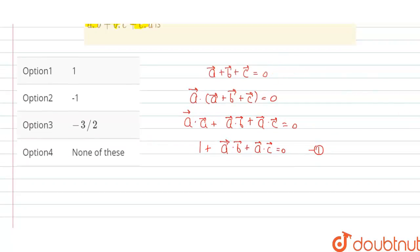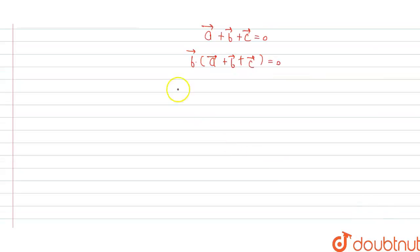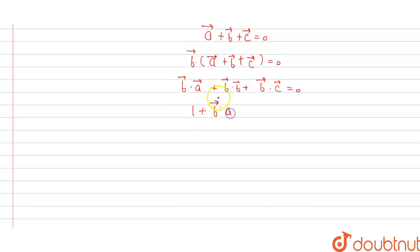Now we will again take a plus b plus c is equal to zero and take dot product with b on both sides. We get b·a plus b·b plus b·c is equal to zero. The value of b·b is one, so we get 1 plus b·a plus b·c equal to zero. So this is equation two.